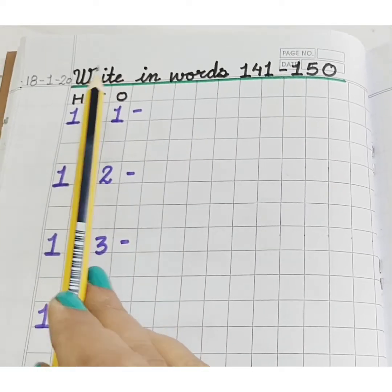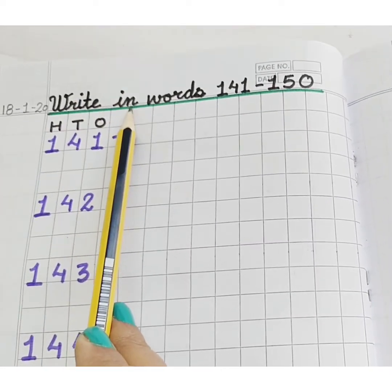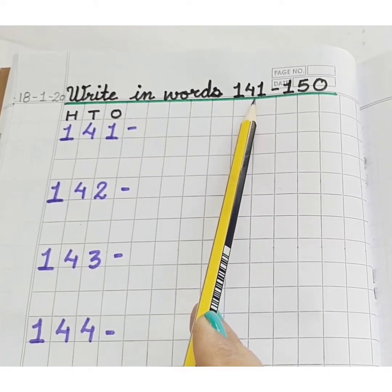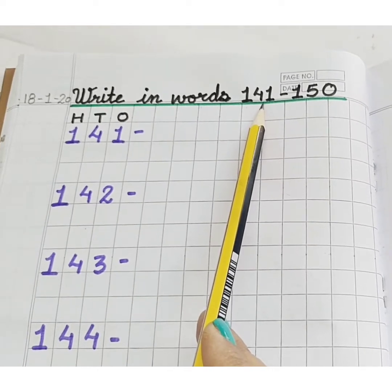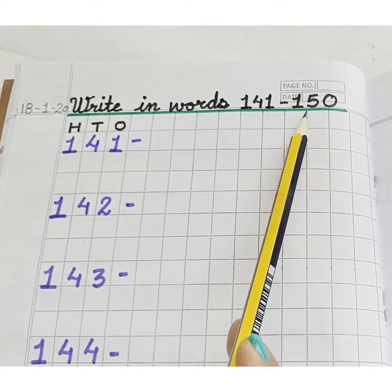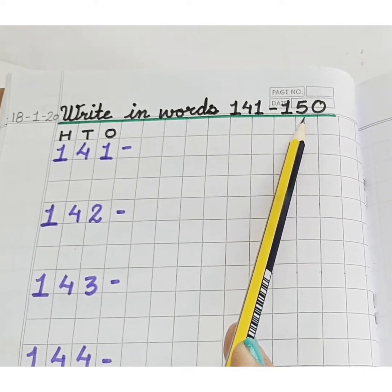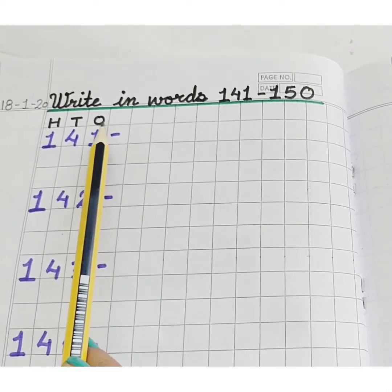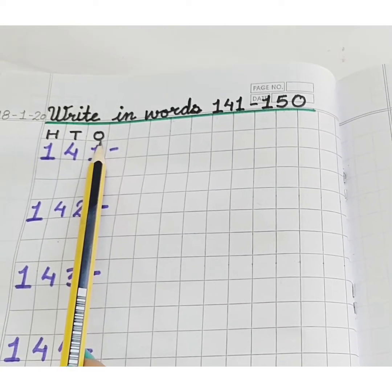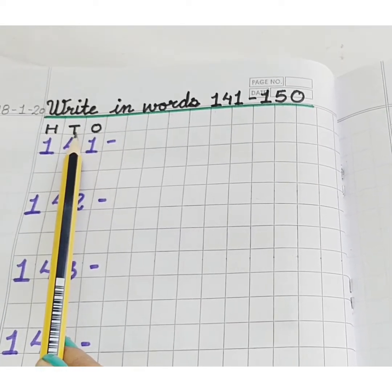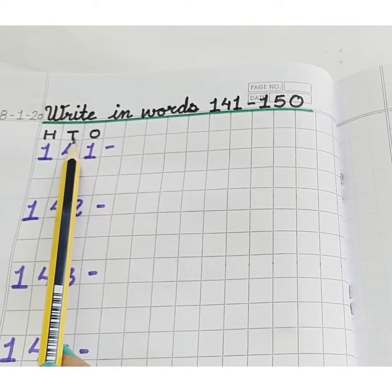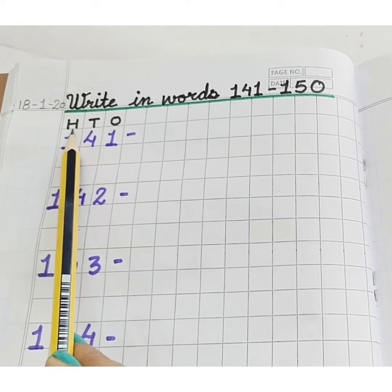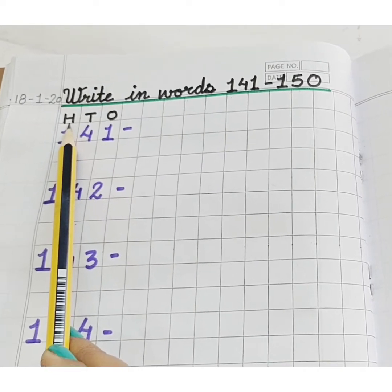Write in words 141 to 150. We will write O for 1s, T for 10s, and H for 100s. Let's start.